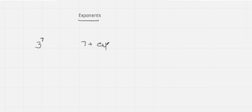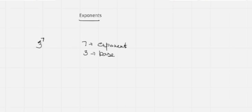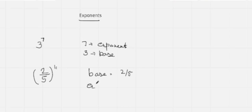Hello students, today we are going to start the exponent chapter. If I am taking 3 power 7, here 7 is your exponent and 3 is your base. We read it as 3 power 7 or 3 exponent 7. Now if I am taking 2 by 5 power 11, it means the base is 2 upon 5 and the exponent is 11.